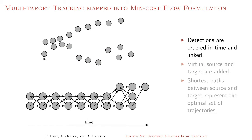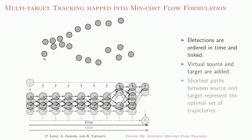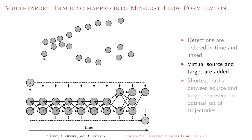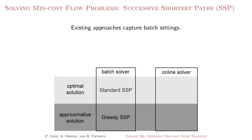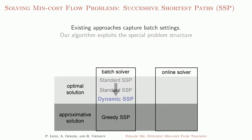Detections are ordered in time to form a graph. The optimal set of trajectories is found as the set of shortest paths between the source and target nodes. While existing approaches capture only batch settings, our algorithm can be extended to the online setting.